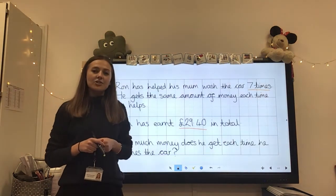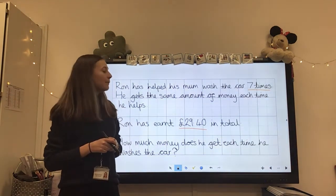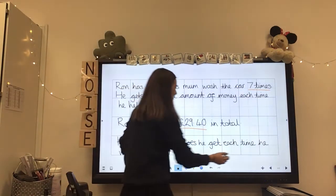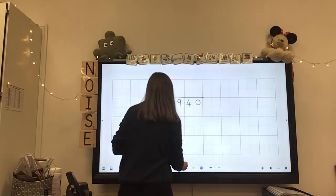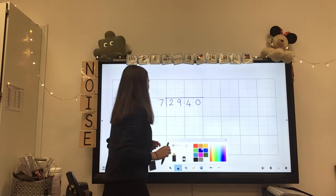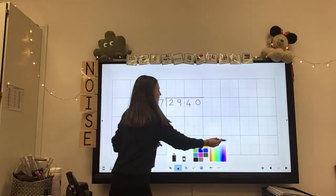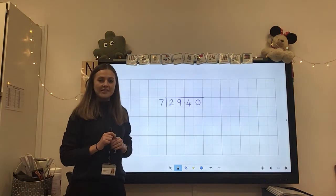We need to divide £29.40 by seven. Okay, let's do that together. Here we go, so I've got my short division set up here. £29.40 divided by seven.